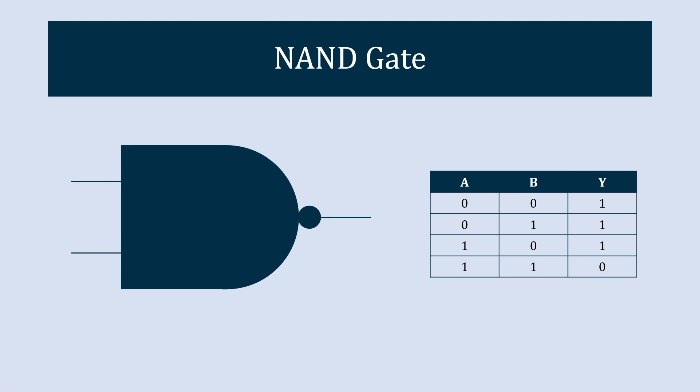The truth table of the NAND gate shows that the output is true if at least one of the inputs is false, or you can say it is the inverted output of the AND gate.